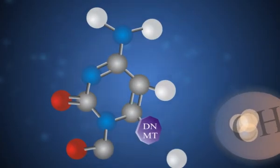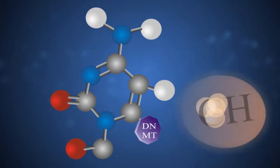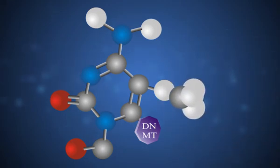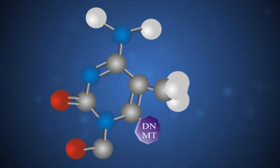This process involves the addition of a methyl group to the DNA nucleotide cytosine through the action of a methyltransferase enzyme, which can result in the silencing of tumor suppressor genes.